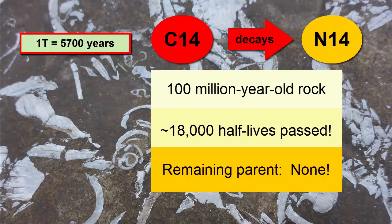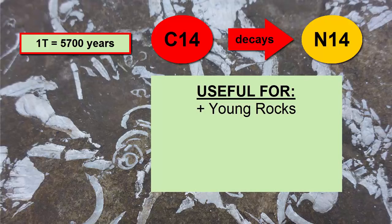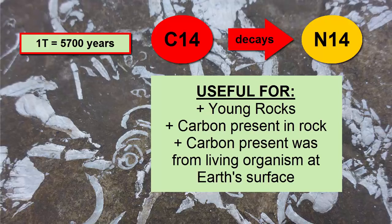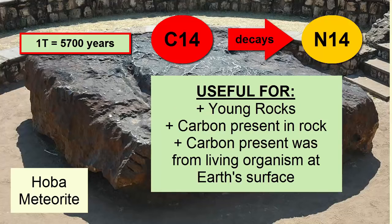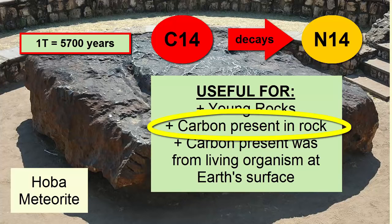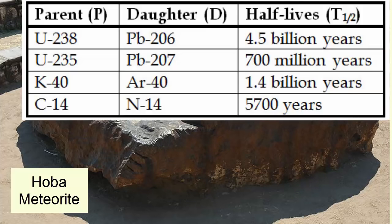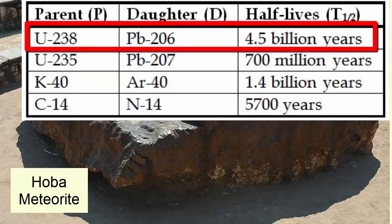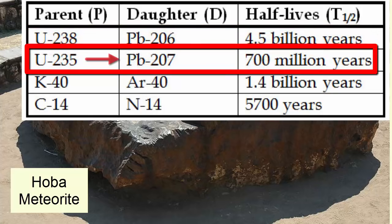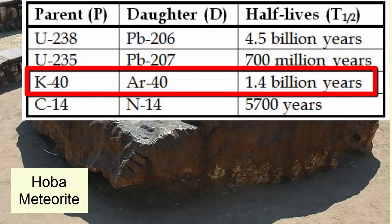In addition to being useful only for relatively young rocks, the carbon-14/nitrogen-14 pair is also useful only if there is carbon in the rock — specifically carbon that was present in a living organism at some point on Earth's surface. While one-half of all meteorites do contain some carbon, they fail on the other two requirements, so we need to identify another radioactive decay pair to date meteorites. Fortunately, there are a number of other pairs, such as uranium-238, which decays to lead-206 with a half-life of 4.5 billion years; uranium-235, which decays to lead-207 with a half-life of 700 million years; and potassium-40, which decays to argon-40 with a half-life of 1.4 billion years.